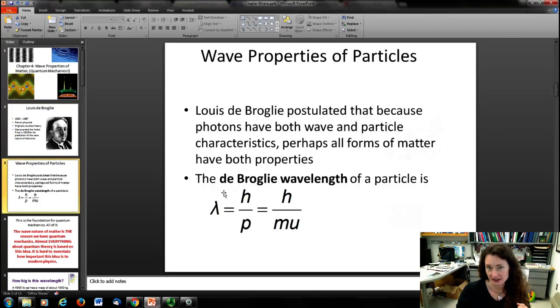So basically, his idea was relatively simple. He said, well, if photons, if light can have wave particle duality, then why can't matter also have wave particle duality?